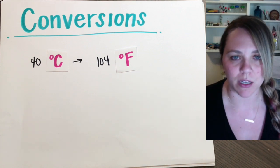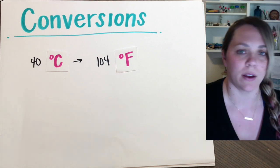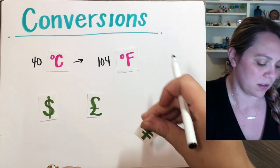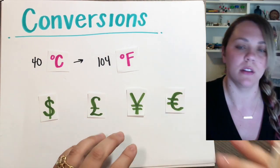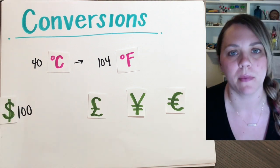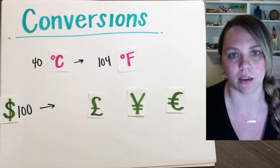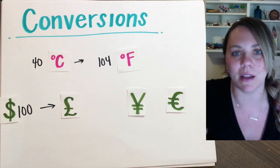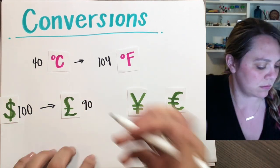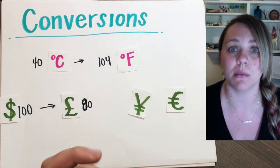Another easy example to conceptualize is if you've ever traveled overseas or to different countries — you would know that you have to convert your money. Assuming you're starting in the States, you could have the same amount of money. Let's say you had a hundred dollars. If you're going to the UK, you'd use the British pound. You'd still have the same amount of money, but your units are changing — so now you only have 80 pounds.